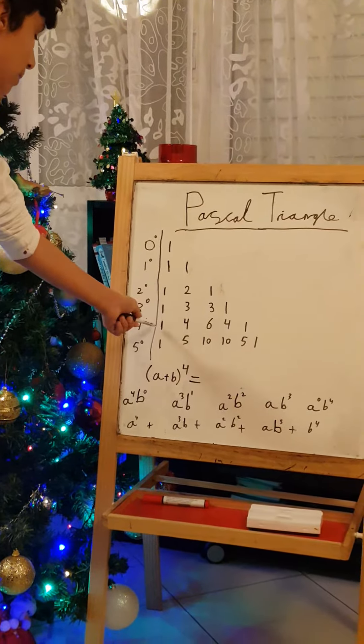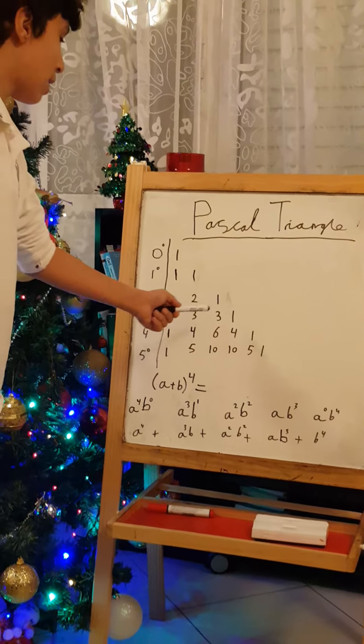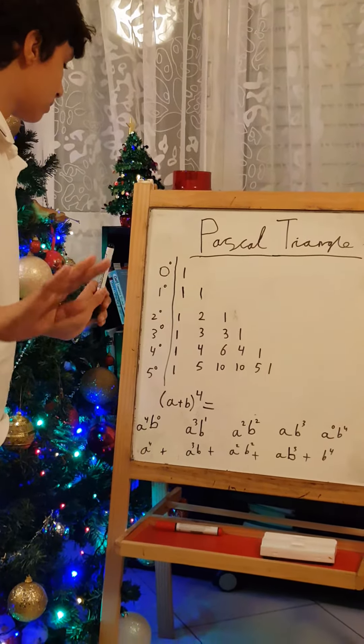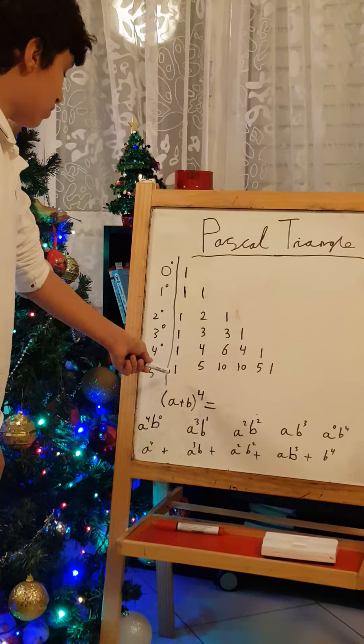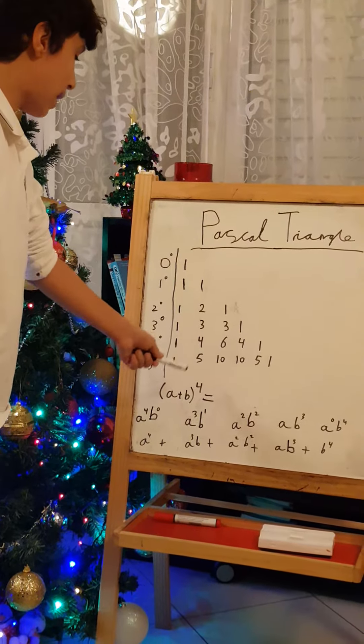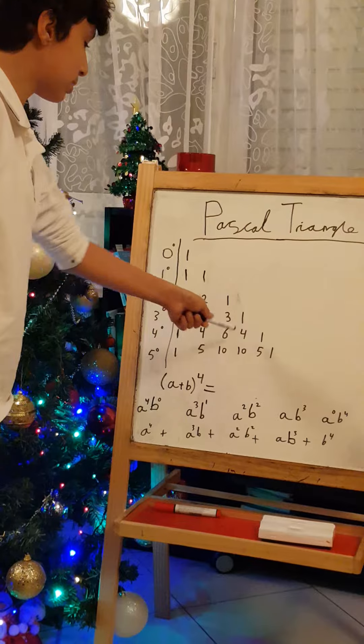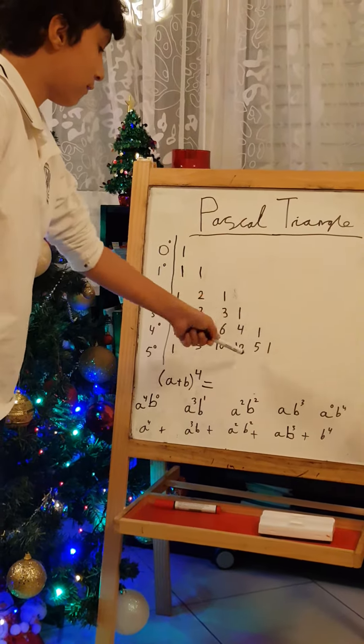1, we drop it, 1 plus 3 equals 4, 3 plus 3 equals 6, 3 plus 1 equals 4, and we drop 1. And 1, we drop it again, 1 plus 4 equals 5, 4 plus 6 equals 10, 6 plus 4 equals 10, 4 plus 1 equals 5, and we drop 1.